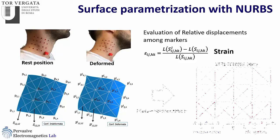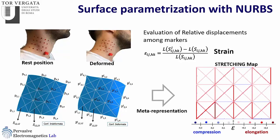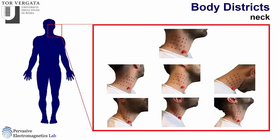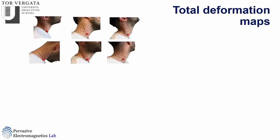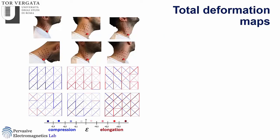We can then introduce a meta-representation — a stretching map where color is related to the deformation: blue for compression and red for elongation. This gives a fixed geometry so we can compare different situations. We can apply this to several gestures on the same district, like the neck, producing different deformation maps. You can see that one gesture is mostly blue — compression — while another is mostly red — elongation.